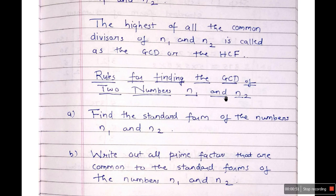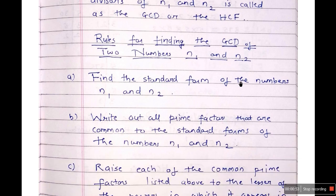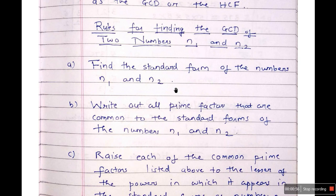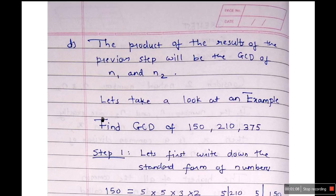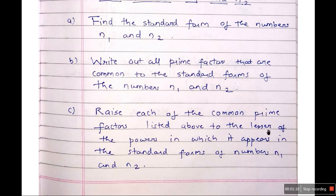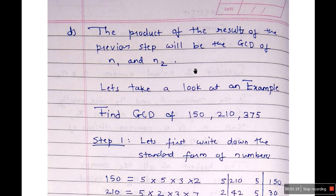Rules for finding the GCD of two numbers N1 and N2. First rule: find the standard form of the numbers N1 and N2. Second rule: write all the prime factors that are common to the standard form of both N1 and N2. Third rule: raise each common prime factor to the lesser of the powers in which it appears in the standard forms of N1 and N2. The last rule: the product of these results will be the GCD of N1 and N2.